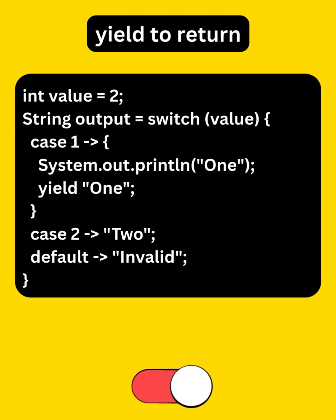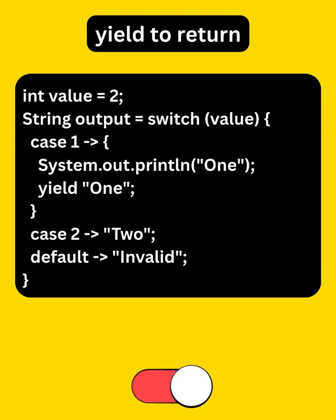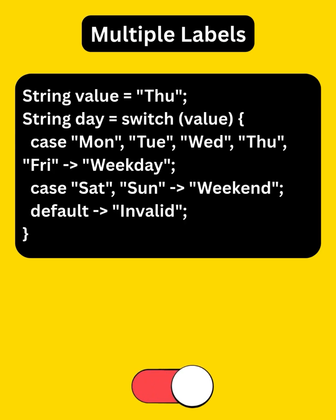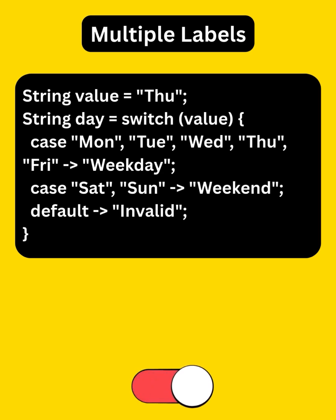If we have multiline logic, yield lets us return a value from a block. In traditional switch statements, blocks can be used without yield for side effects as usual. Support for multiple labels in a single case was added using commas, and this works for both switch statements and switch expressions.